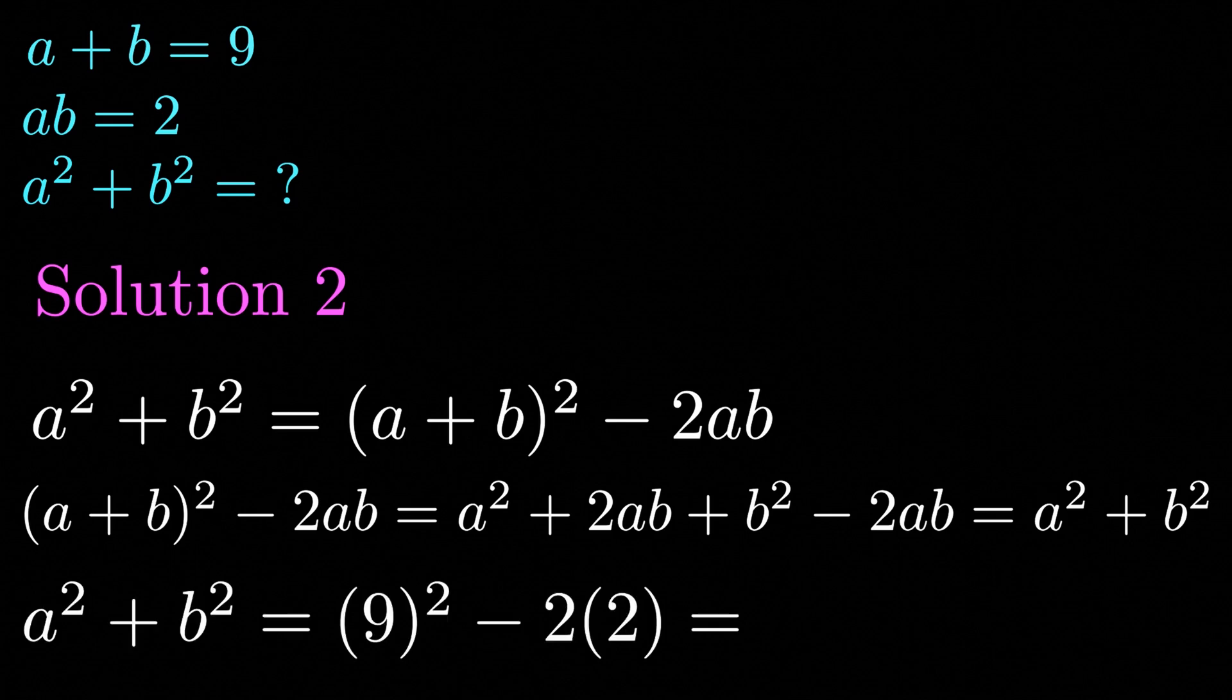So we have a squared plus b squared is equal to 9 squared minus 2 times 2 which is equal to 77. This agrees with the answer from the first solution.